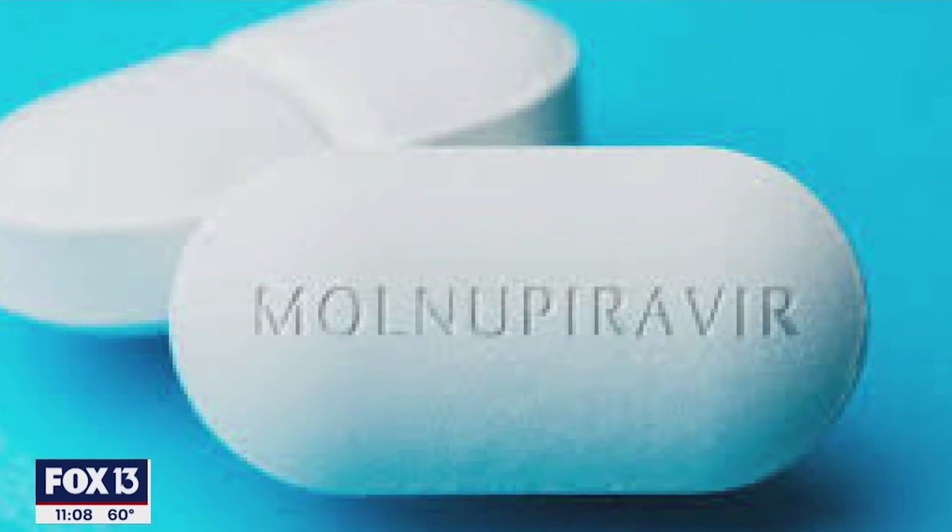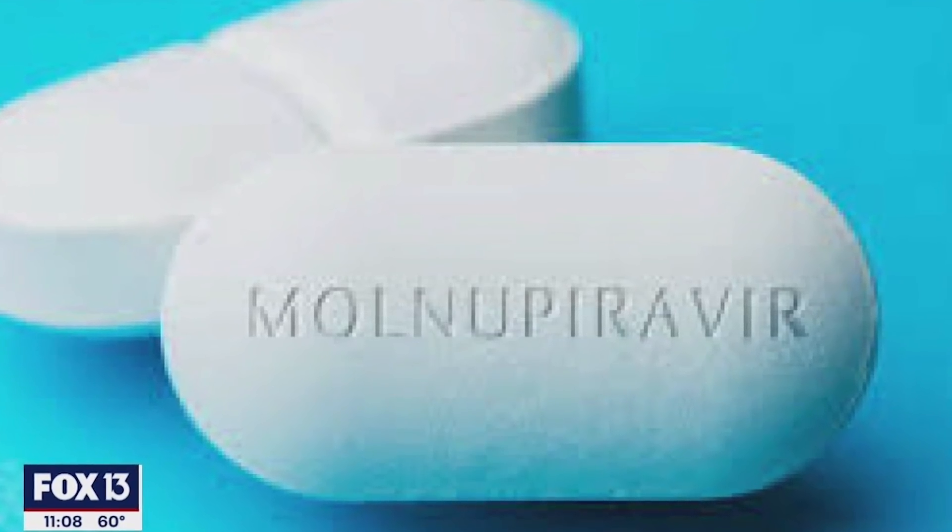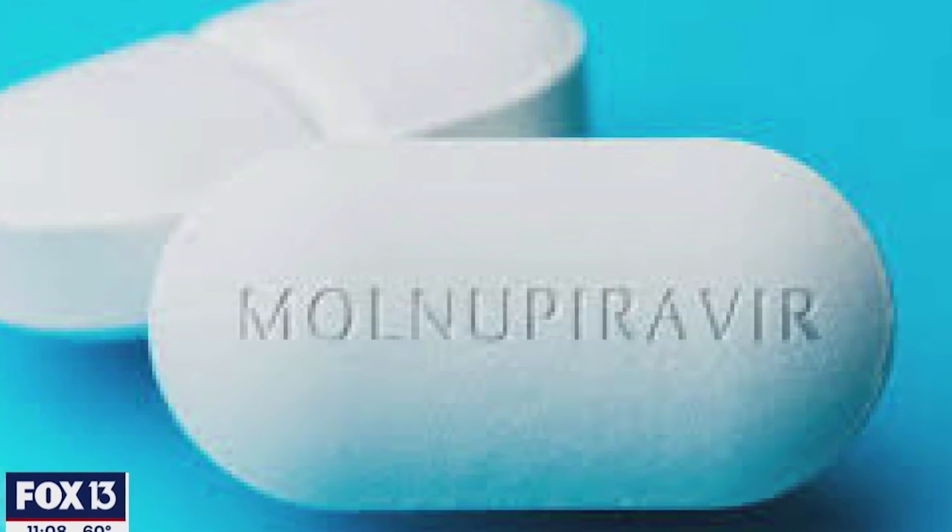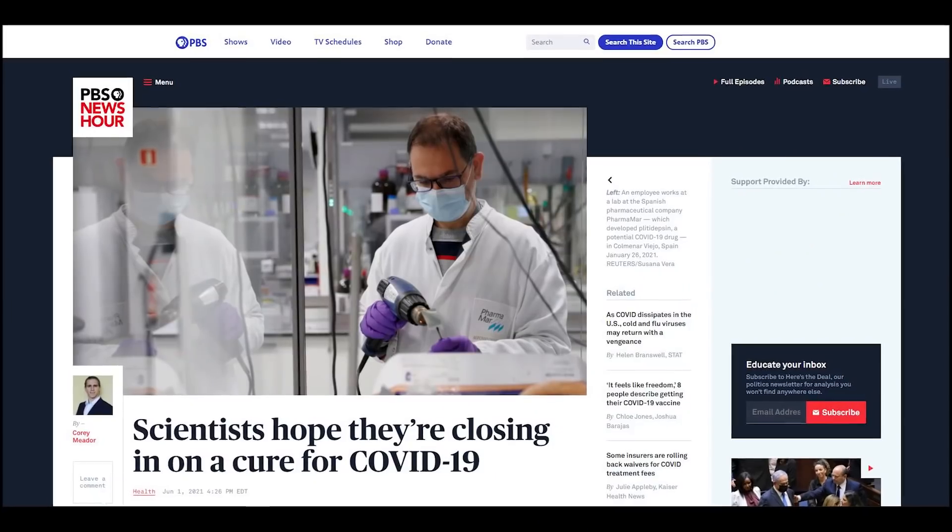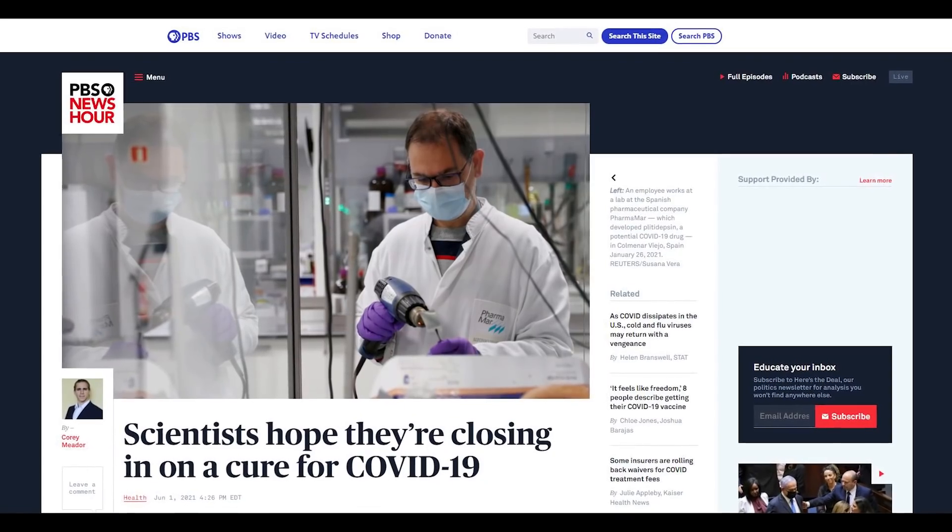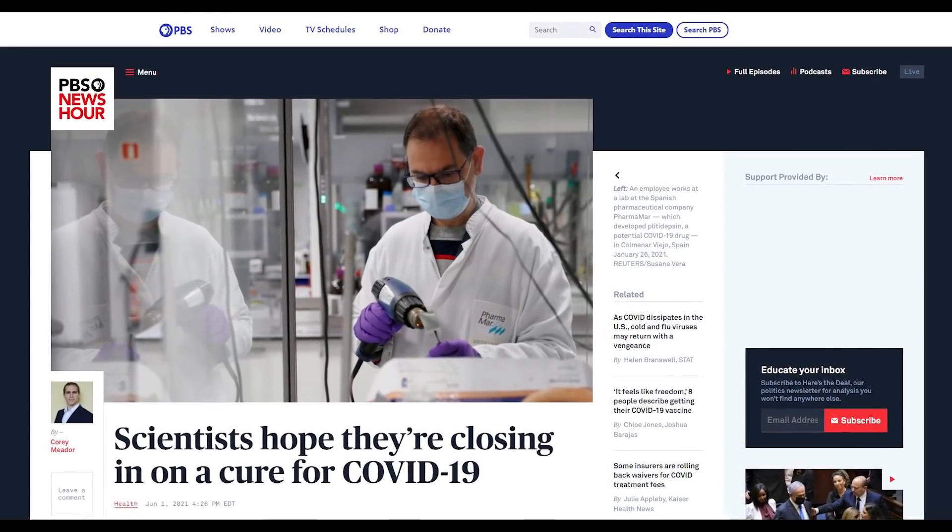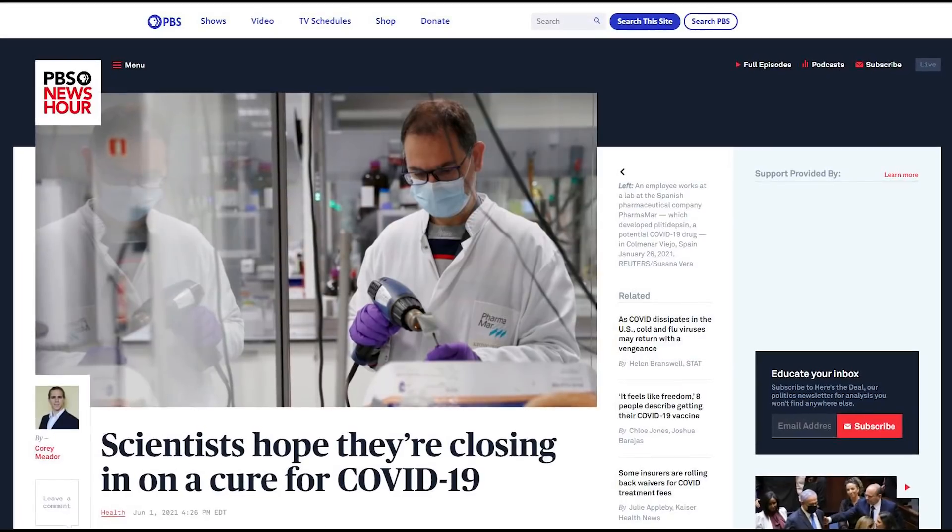Their hard work bore some success as interim data showed their drug, Molnupiravir, is quite powerful against COVID. According to PBS NewsHour, Molnupiravir was a result of Hazuda's success in narrowing which compounds could affect the coronavirus' replication process.